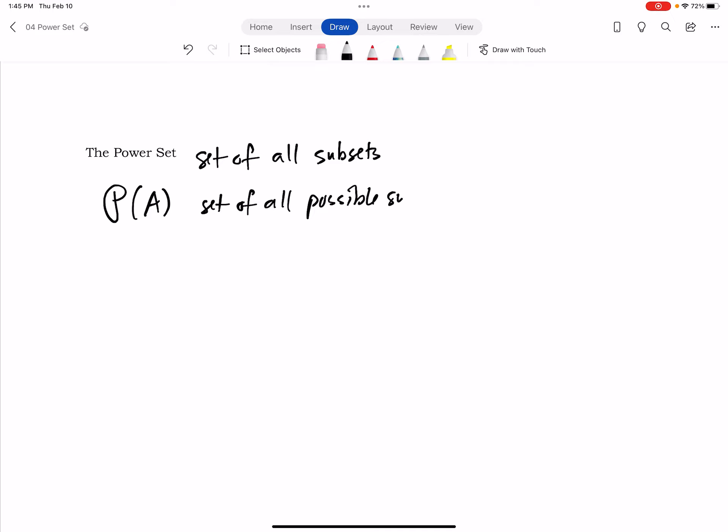So the power set of A is the set of all possible subsets of set A. This is really interesting because the elements of the power set are sets.